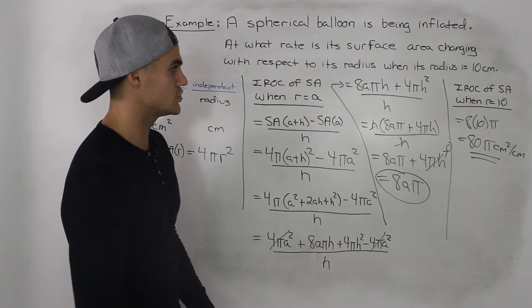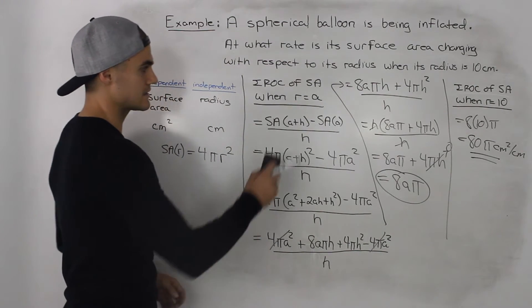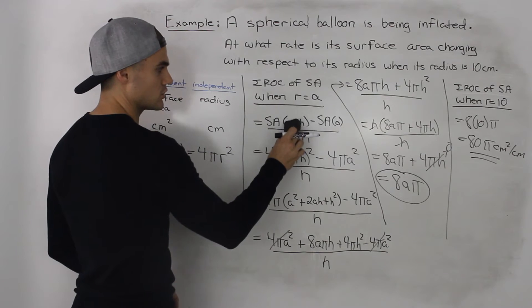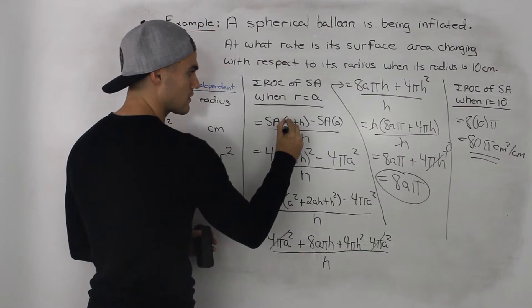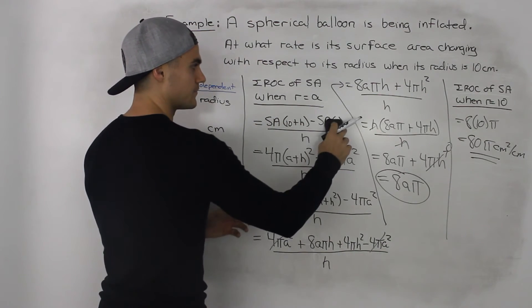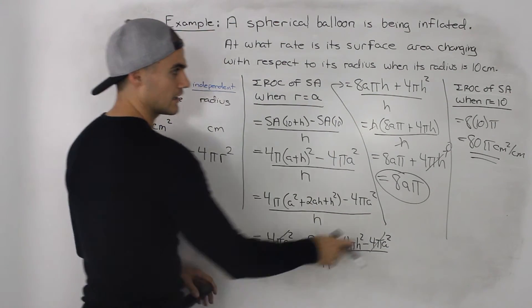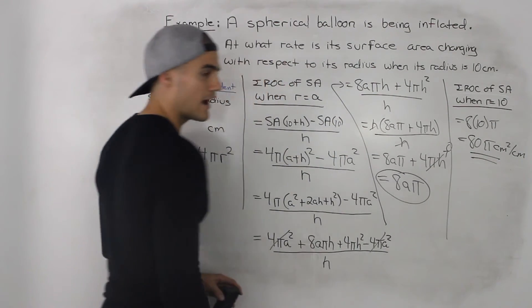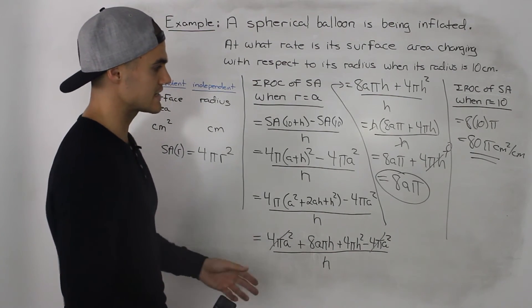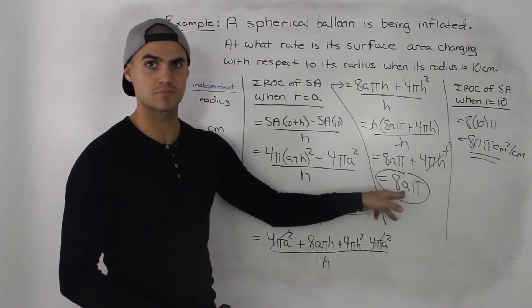Now again you could have just right away instead of making a general expression you could have just put 10 right away here instead of a, and then algebraically done it and you would have got to 80π right away. However as I said I always recommend getting a general expression first.